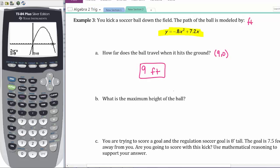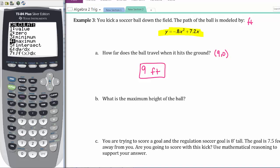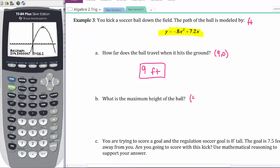Then the maximum height of the ball. We need to figure out what the maximum point is here. We need to calculate. Second CALC MAXIMUM. I need to head back towards that point. I'm going to do similar to what I just did for the zero, left bound right bound. I'm going to go to the left a little, press ENTER, then go on the other side on the right and press ENTER, press ENTER one more time. The point is 4.5, 16.2. I'm looking for the height of the ball, so that's 16.2 feet.